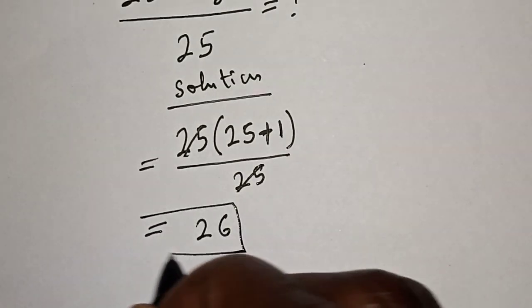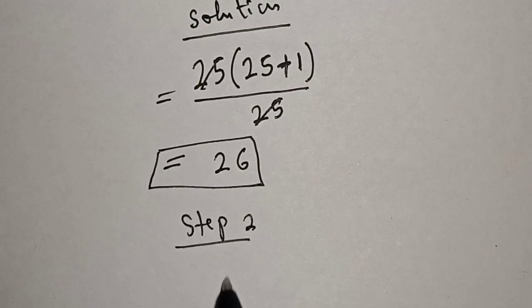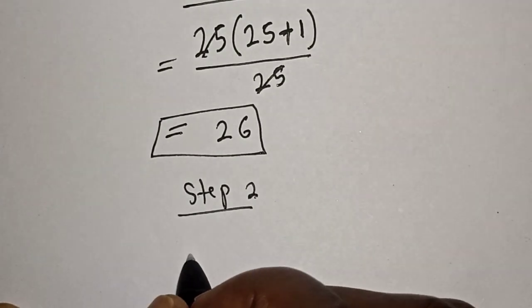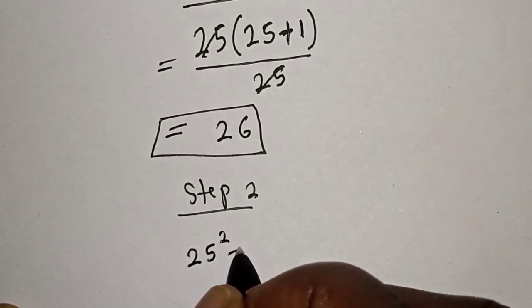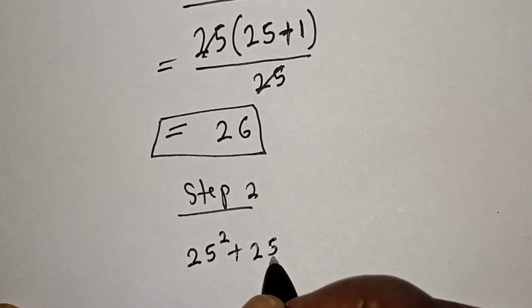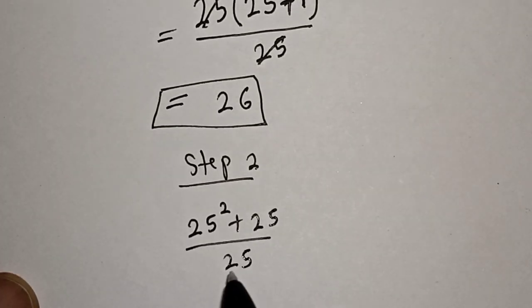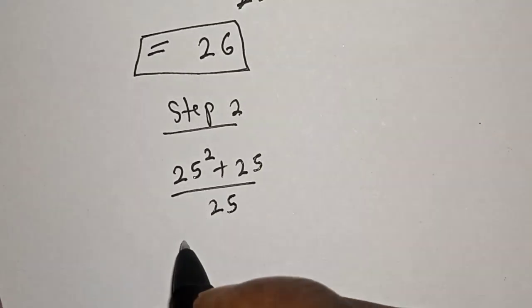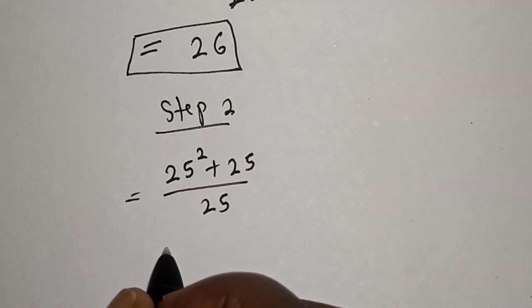Or let's solve in another way. Step 2: We have 25 squared plus 25 over 25, then let's split this. And this is equal to 25 squared over 25 plus 25 over 25.